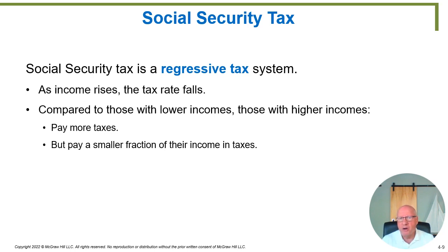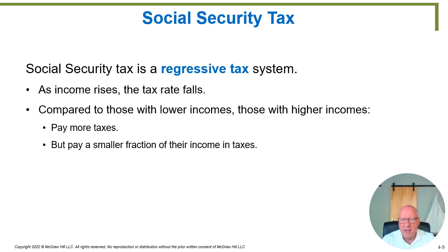The Social Security payments are also regressive. Rich people don't receive as large a payment as a percentage of their income. If a plumber and a high-earning lawyer both receive a $2,000 Social Security check when retired, that $2,000 is a much higher percentage of what the plumber's income had been than it is for the multimillionaire lawyer. So the Social Security tax may be regressive, but so are the payments from Social Security.